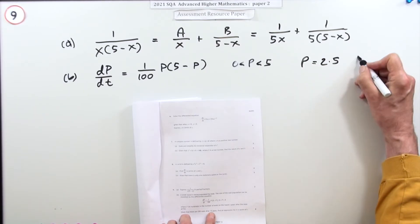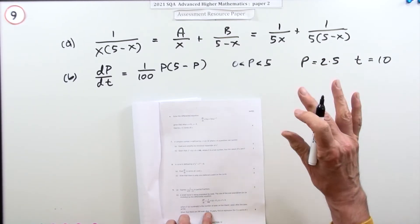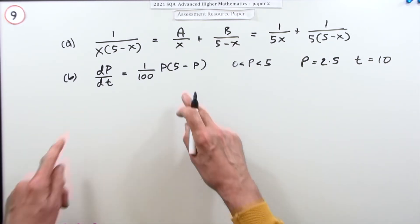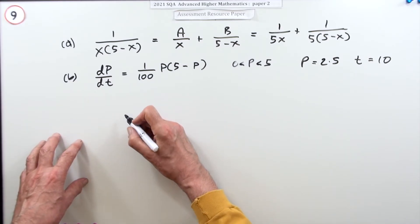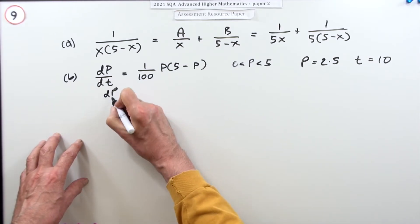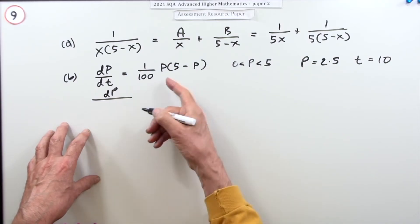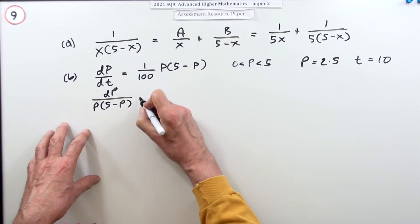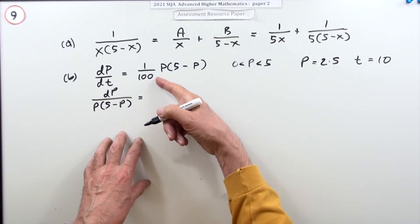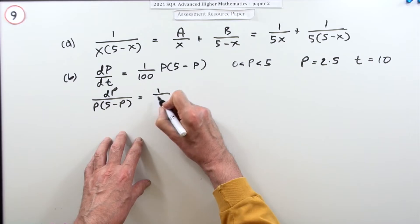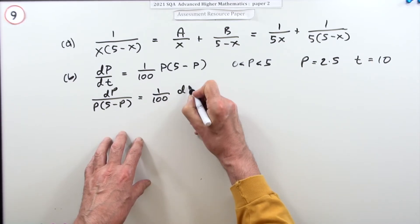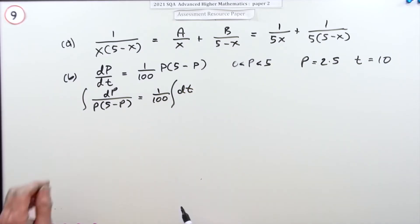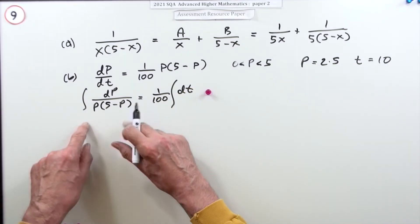And from that you're to find an expression for P in terms of t. Well, first of all, separate the variables. So I'll have dP over P times (5 minus P) is going to be 1/100 of dt. Then integrate that, so I think that was the first mark.